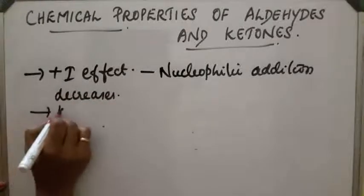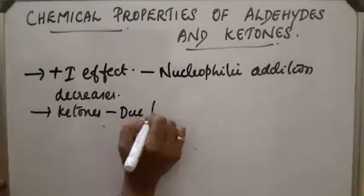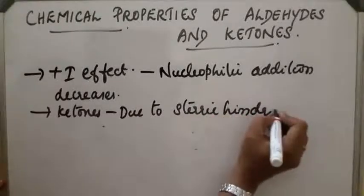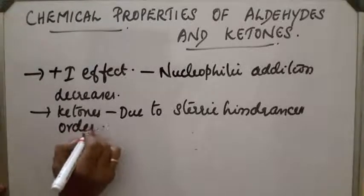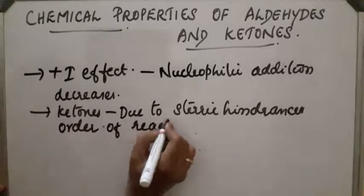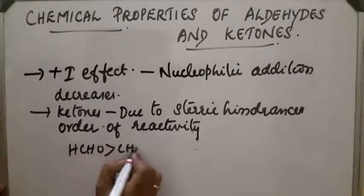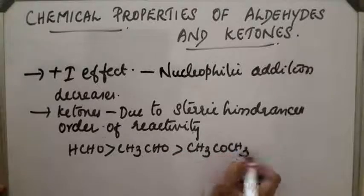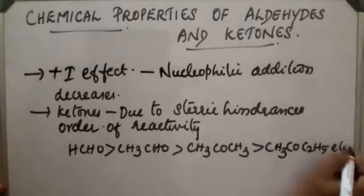In the case of ketones, more alkyl groups are present, so due to steric hindrance, nucleophilic addition also decreases. The order of reactivity is: HCHO > CH₃CHO > CH₃COCH₃ > CH₃COC₂H₅, and so on.